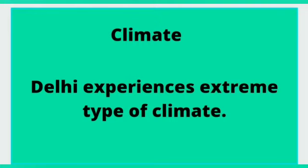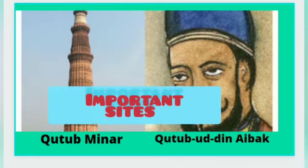The next topic is climate. Delhi experiences an extreme type of climate — in winter it is cold, and in summer it is very hot. Loo is a hot, dry wind which blows during the summers in Delhi. It receives moderate rainfall between July to August.